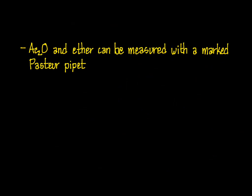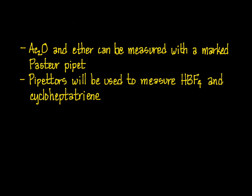Here are some tips for executing the synthesis of tropilium fluoroborate. The acetic anhydride and diethyl ether can be measured with a marked Pasteur pipette, like the sulfuric acid in the first reaction. More accurate pipettors will be supplied for measuring the fluoroboric acid and the cycloheptotriene.